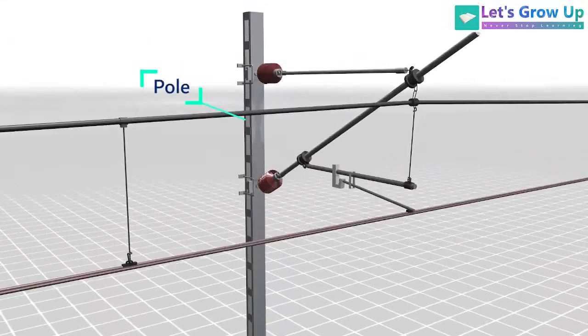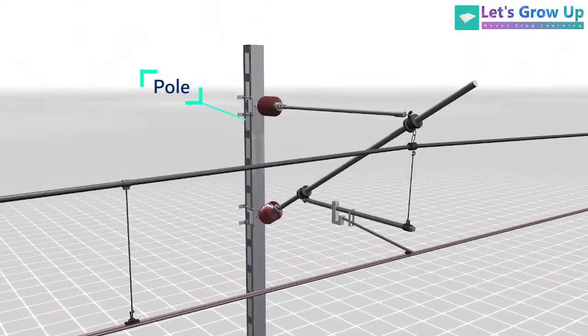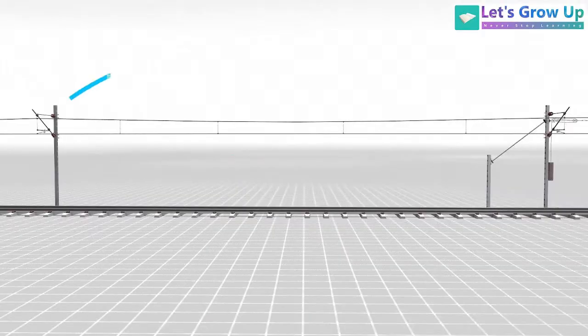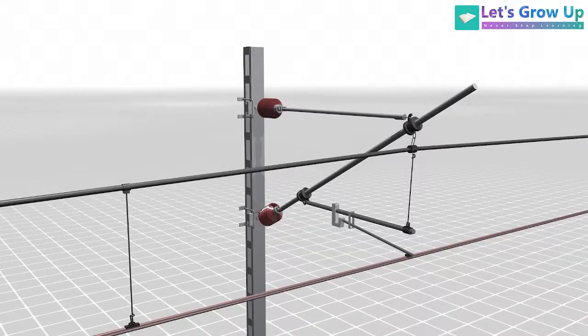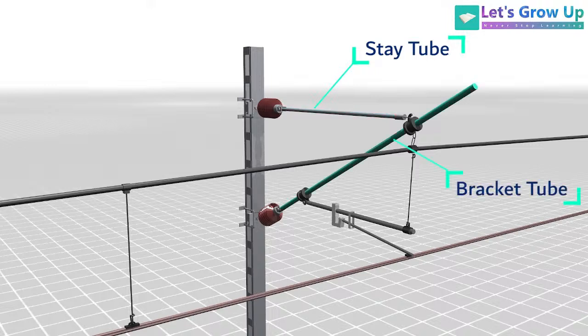Poles are used at intervals along the railway to support the contact wire. The distance between two poles along the railway track is typically 55 meters. Here are some components: stay tube, bracket tube, steady tube, register arm, and insulator.